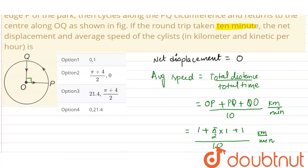Now checking from the options, that is option number 4: displacement is zero and average speed is 21.4 kilometer per hour. Okay, thank you.